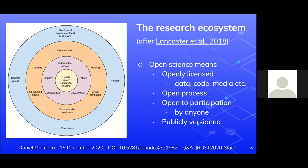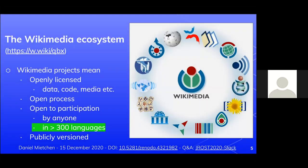Now let's look at the Wikimedia ecosystem, starting with those same criteria — they're essentially all the same. Wikimedia projects are openly licensed in terms of data, code, and media. It's actually a full open stack, in contrast to this conference. It's also an open process, open to participation by anyone across related language pieces, because in Wikimedia projects there is a stronger focus on multilinguality. Open science often takes place in a monolingual or English-plus-one-language environment.